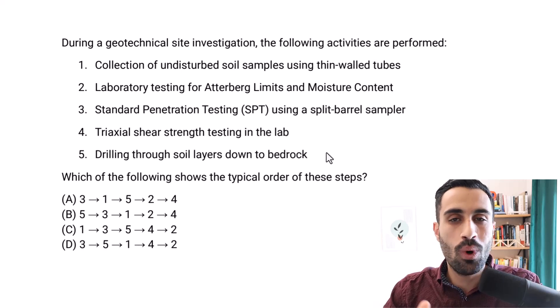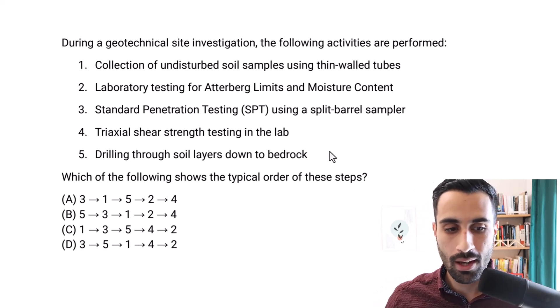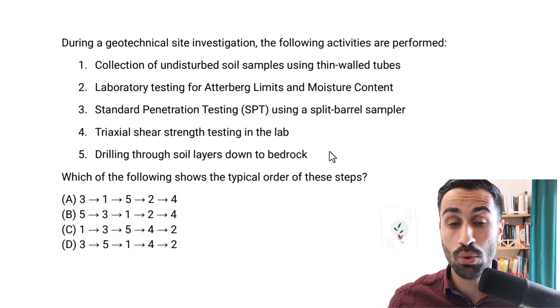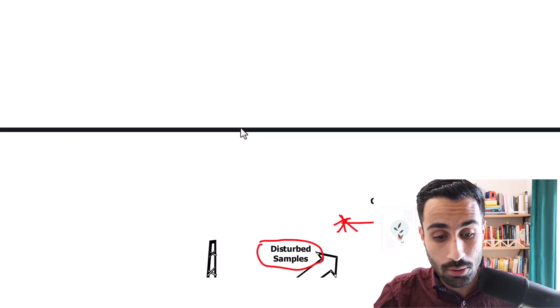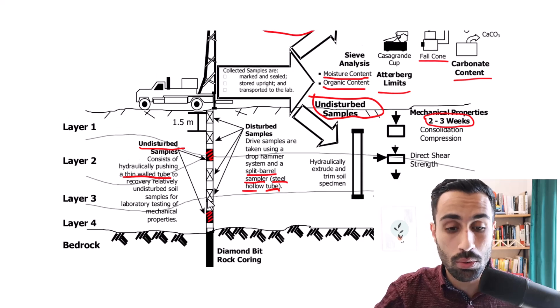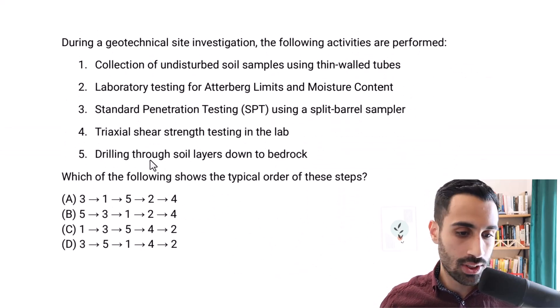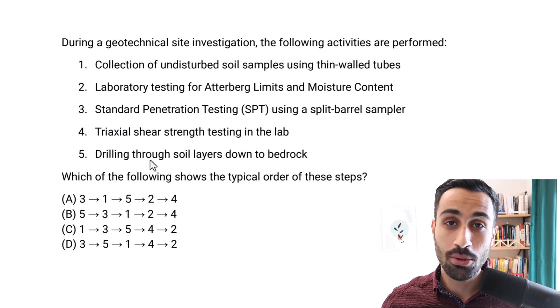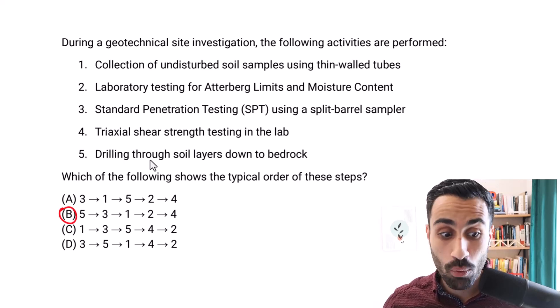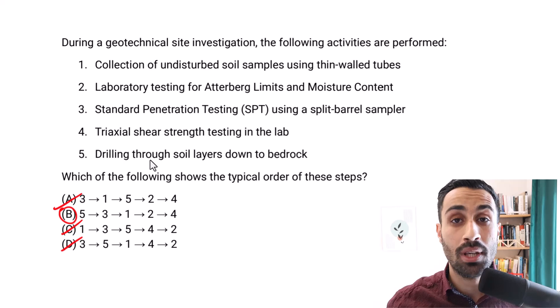And to answer this question, what's going to be the order? What comes first? Number five, we drill through the soil layers. That's what we do. We put the drill rig, just drill through it. So that one will be number five that comes first. So this one is obviously going to be B. So on the exam, I want you to do this. If it's obvious, pick B and move on. This one's tricky.